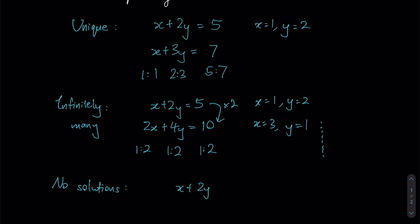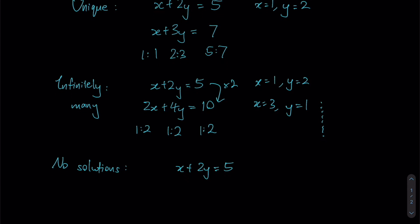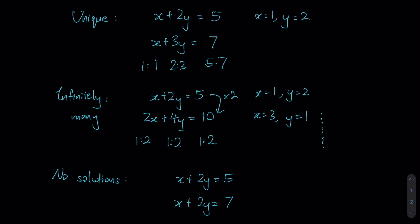That leaves us with our last case whereby we have no solutions at all. How is this done? Really simple. Let's say we have x + 2y = 5 again and now we have x + 2y = 7. These two solutions clearly when put together result in some kind of contradiction. How can this be equals to 5 if this is equals to 7 as well? Hence, since there is no such set of values for x and y that will make these two possible at the same time, then this will result in no possible solutions.